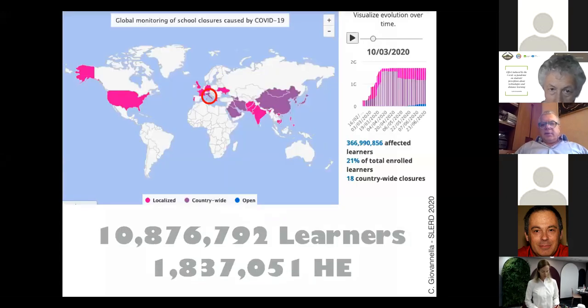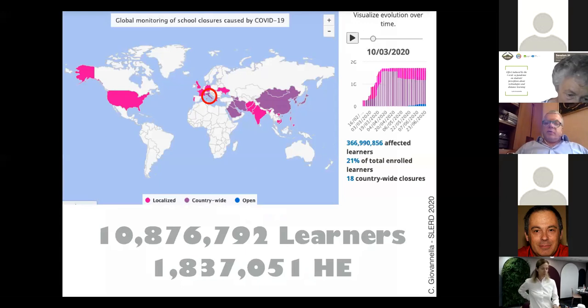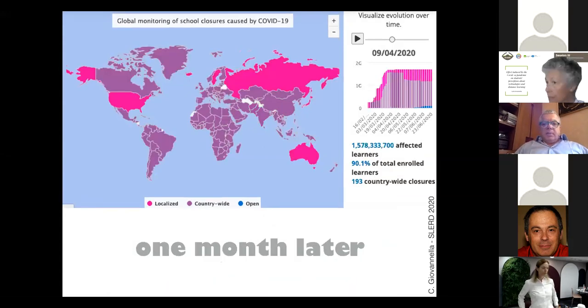This is a picture of the 10th of March. At this time, there were already 21 percent of the total enrollment that were forced to attend online courses in Italy, where this lockdown affected about 11 million learners, and about 1.8 million of them were enrolled in tertiary education. This was the situation just one month later when we performed the survey.